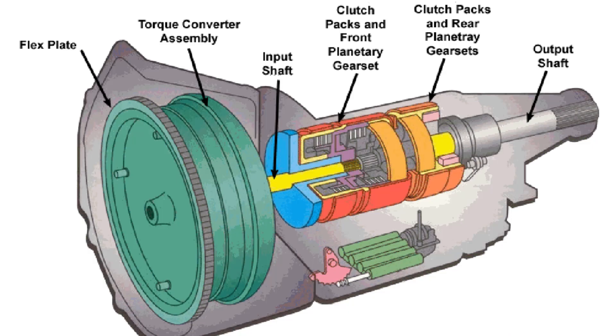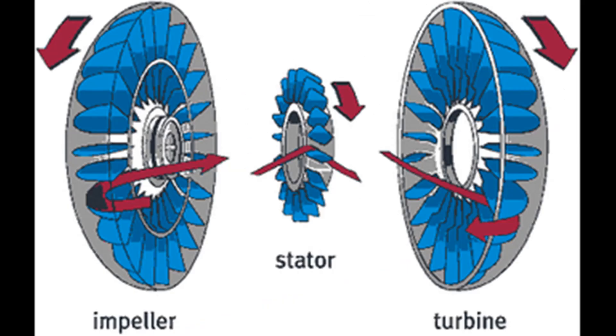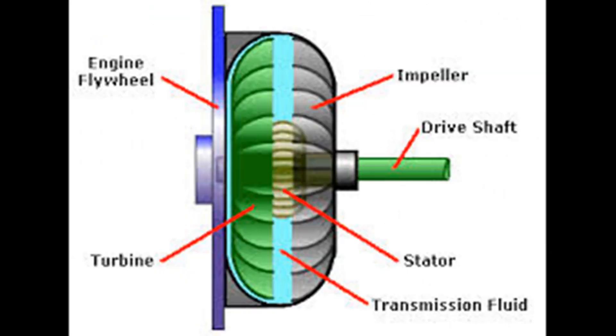Torque converters are made up of three main components: impeller, turbine, and stator. These three components lock and unlock with the help of multiple clutches and maintain predetermined gear ratios.